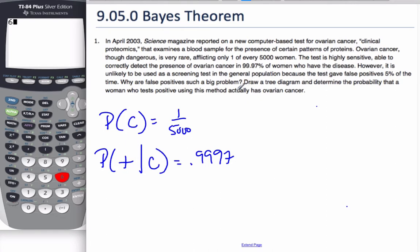However, it is unlikely to be used as a screening test in the general population because the test gave false positives 5% of the time. So false positives, well, that means that I got a positive result, given that they did not have cancer. And that happens 0.05% of the time.